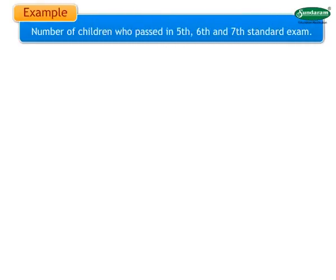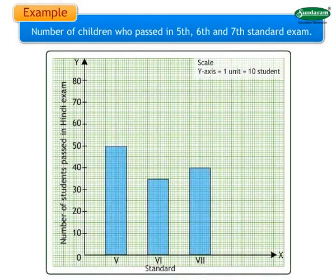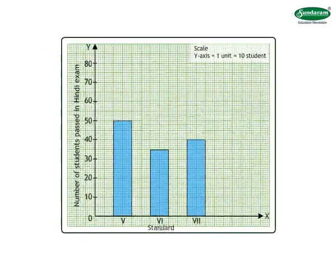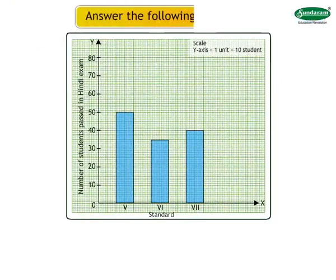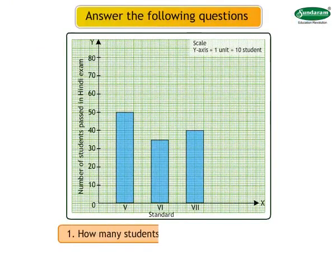Example. Number of children who passed in 5th, 6th and 7th standard exam are given in the bar graph. Answer the following questions. Number 1: How many students passed in Hindi in class 6?